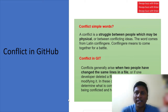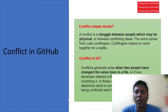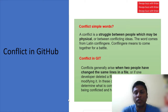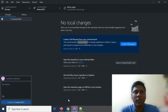In Git, a conflict generally arises when two people have changes in the same line of a file, or one developer deleted a file while another developer wants to modify it. In this case, Git cannot automatically determine what is correct. Git will mark this file as being conflicted and halt the merging process.